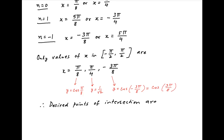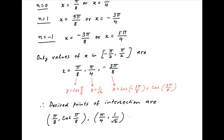Therefore, the desired points of intersection in the interval −π/2 to π/2 are (π/8, cos(π/8)), (π/4, 1/√2), and (−3π/8, cos(3π/8)).